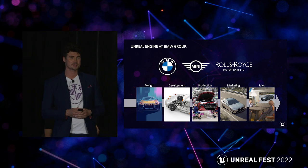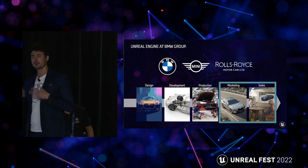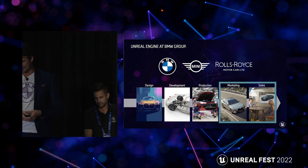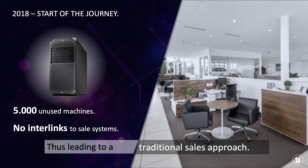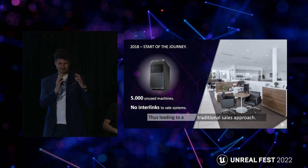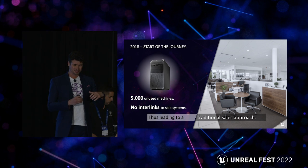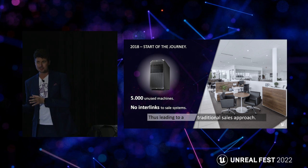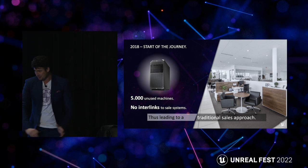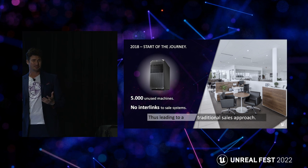Today we want to focus on marketing and sales, because that's the part of Unreal Engine our customers are experiencing at BMW Group. Back in 2018, we had about 5,000 machines at dealerships that were not being used at all. The reason was we were on a different game engine, and the software wasn't interlinked to the sales systems. A sales advisor would configure the car in one system, then have to do the whole thing again on that machine if the customer wanted to see it in 3D real-time.